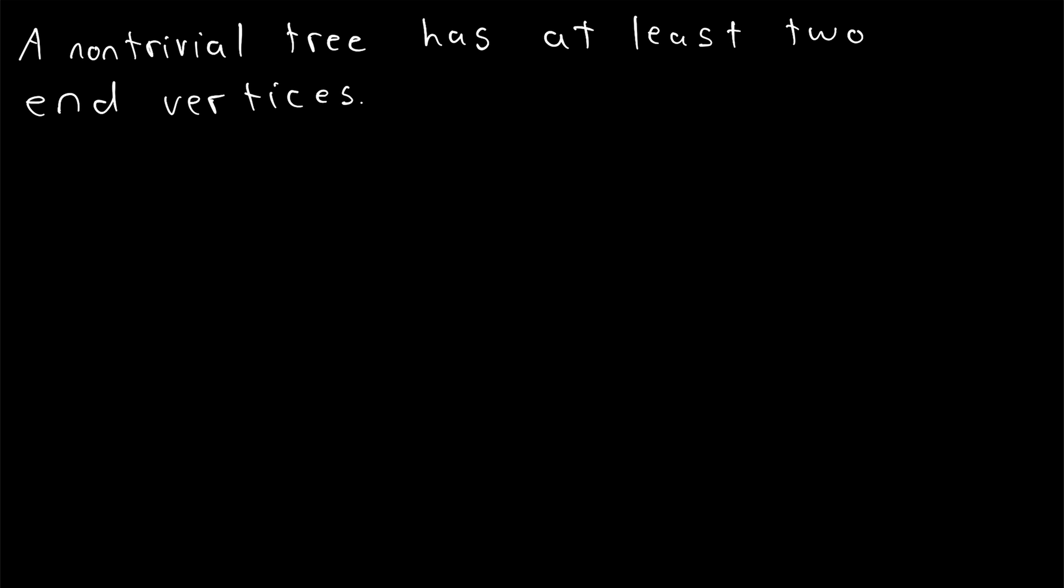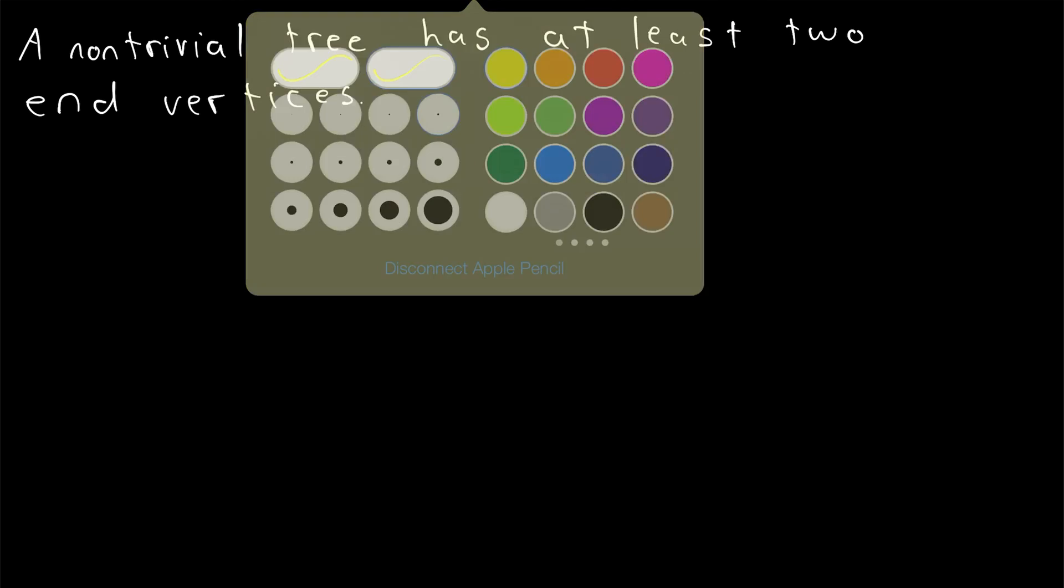With that out of the way, let's get to the main point of the lesson, which is, of course, proving this result. We begin the proof predictably by saying, let T be a non-trivial tree graph. Now, where might we be able to always find end vertices in a tree graph? Let's just draw one and have a quick think about it.